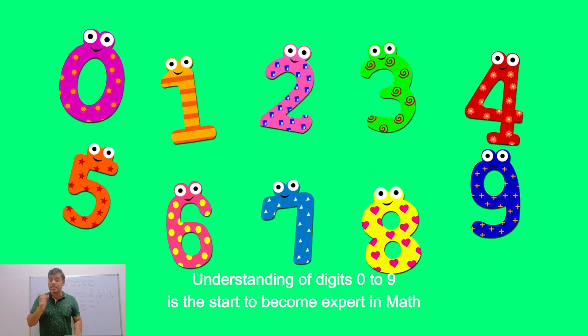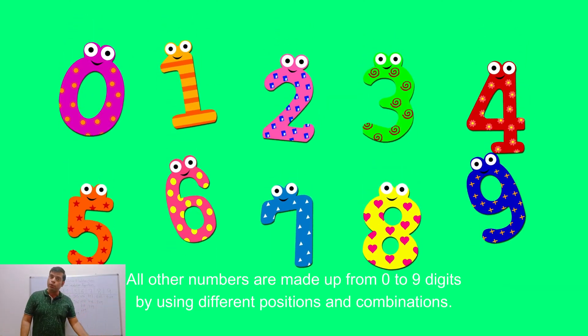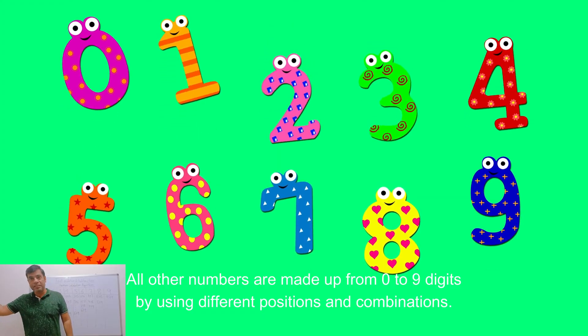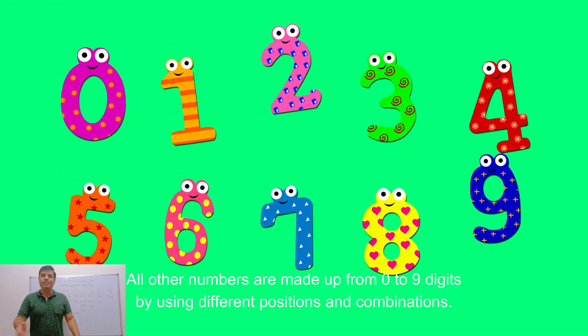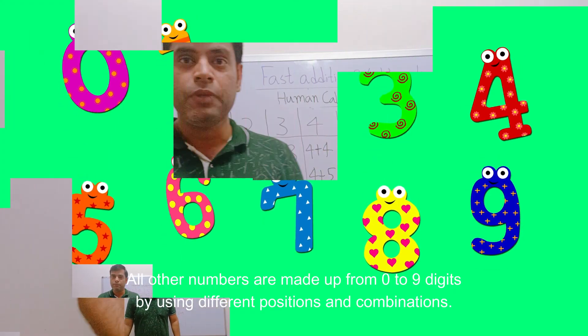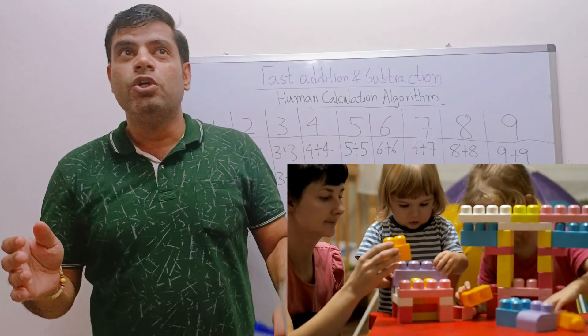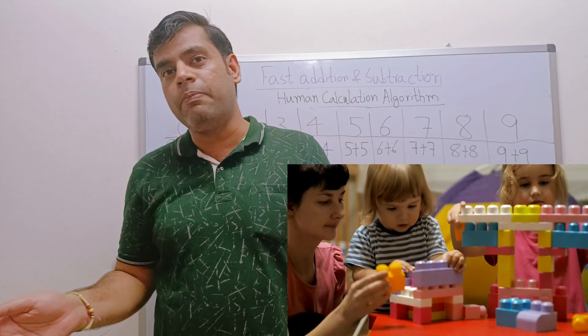With the help of these 10 digits they have made infinite numbers just by rearranging them, giving them new positions like ones, tens, hundreds, thousands, ten thousand, in some cases even decimal like one tenth, one hundredth. We will learn about that as well.